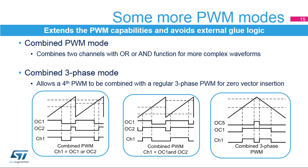In the combined three-phase mode, channel 5 of the timer can be combined with any of channels 1, 2, or 3 to insert a low state in the middle of a centered pattern PWM signal. This mode greatly simplifies the implementation of low-cost current sensing techniques for three-phase motor control using a technique usually referred to as zero-vector insertion.